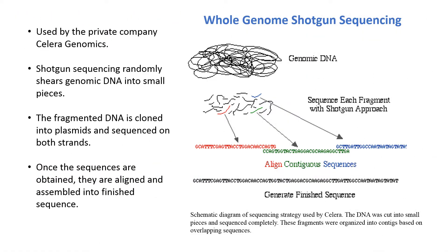In 1998, a parallel project was conducted by the private company Celera Genomics. Celera used a riskier technique called whole genome shotgun sequencing, which had been used to sequence bacterial genomes that are smaller in size and contain less repetitive DNA. Shotgun sequencing randomly shears genomic DNA into small pieces, which are cloned into plasmids and sequenced on both strands, thus eliminating the BAC step used in the publicly funded approach. Once the sequences are obtained, they are aligned and assembled into finished sequence.